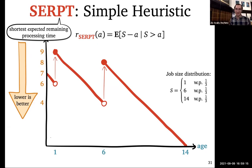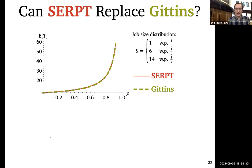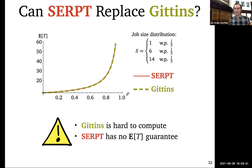For this job size distribution, SERPT and Gittins have nearly identical performance. But we're left with a trade-off: Gittins is really complicated and hard to compute; SERPT is simple and seems great, but there's no provable guarantee on its mean response time. So I'll give two answers to the question: can SERPT replace Gittins?